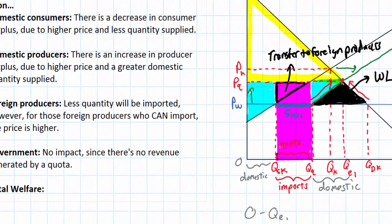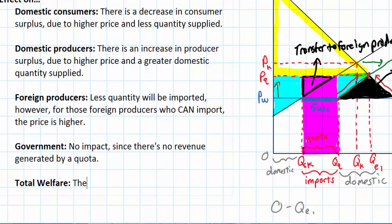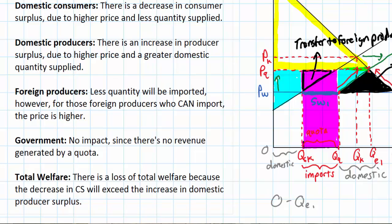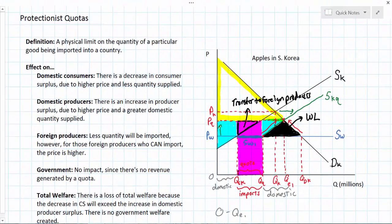So the effect on total welfare is negative — there is a loss because the decrease in consumer surplus exceeds the increase in domestic producer surplus, and there is no government welfare. Quotas are a physical limit on the quantity of a particular good being imported into a country. The goal, as with all protectionism, is to protect domestic producers, increasing producer surplus and producer revenues, but this comes at the expense of domestic consumers and foreign producers who would have been selling much more of the good without the quota.